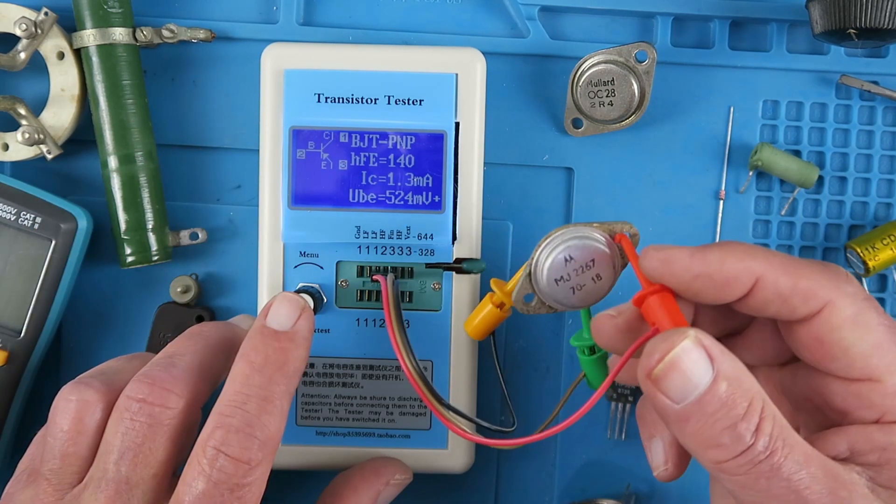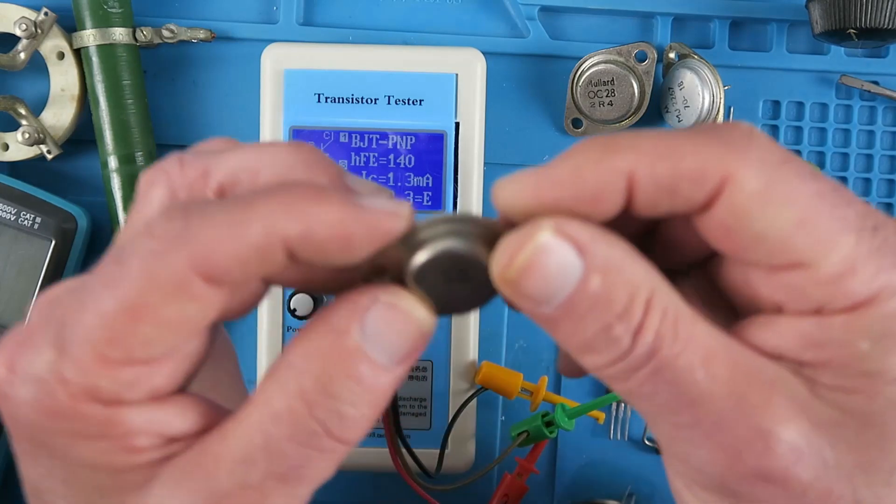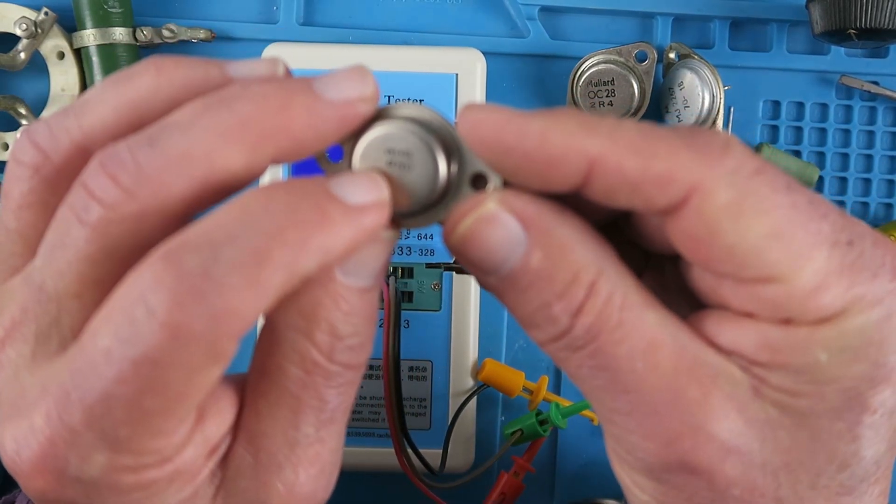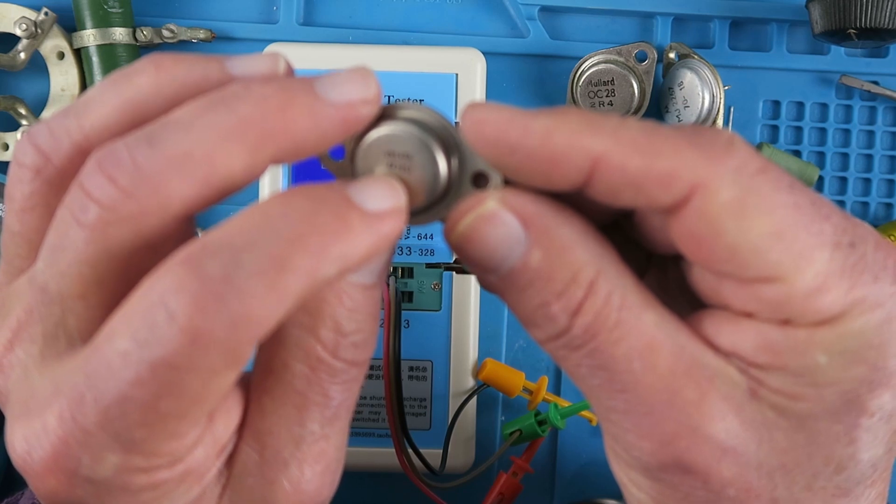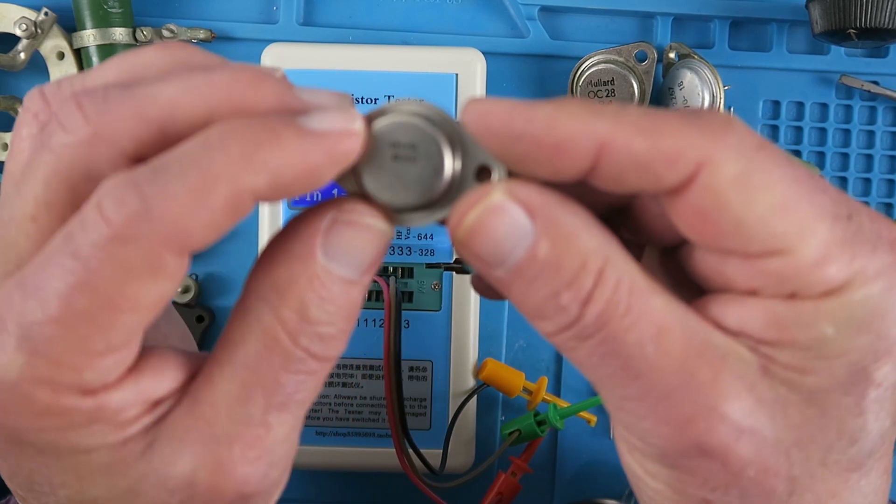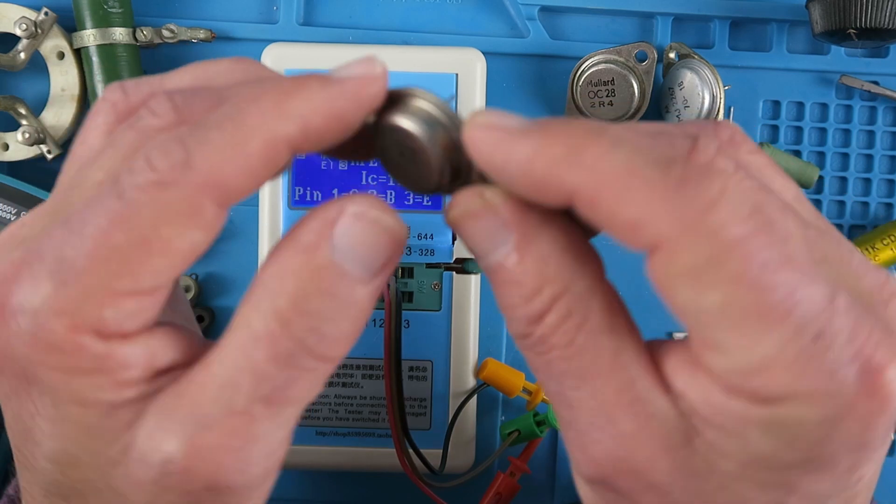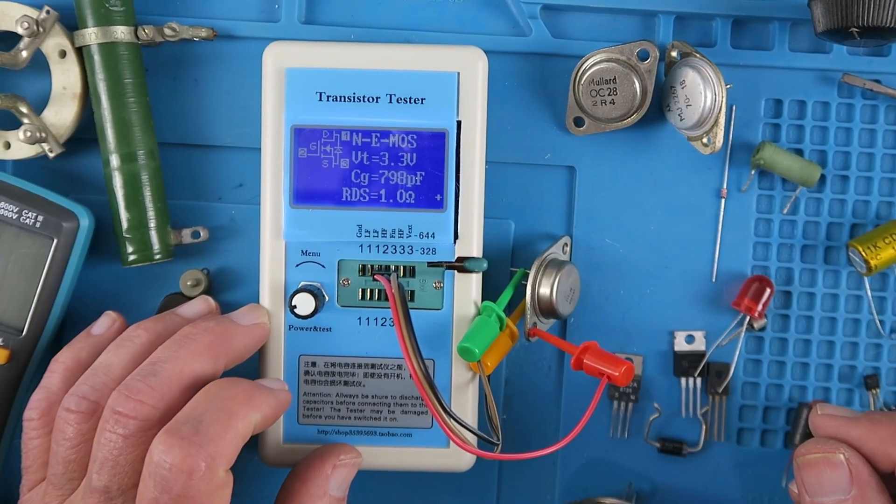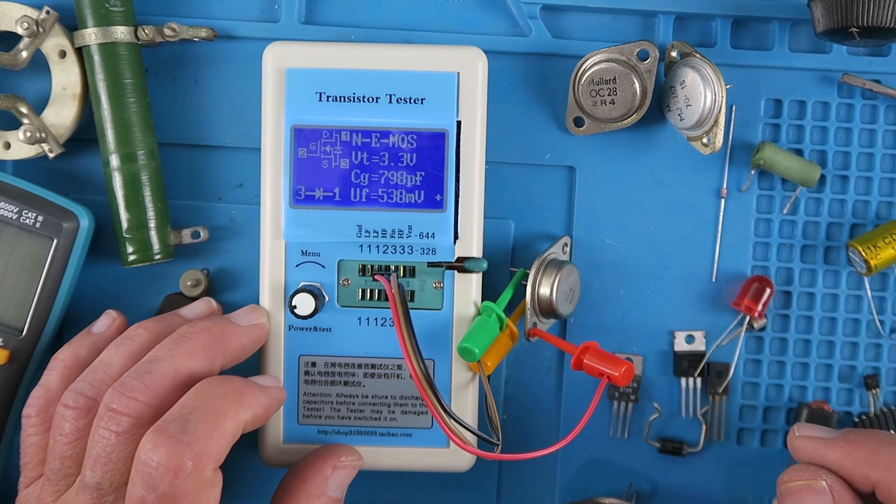What about this guy? I can recognize the mark there as Siliconics, and 1978, VN64GA. So the Siliconics device has been identified here as a MOSFET.